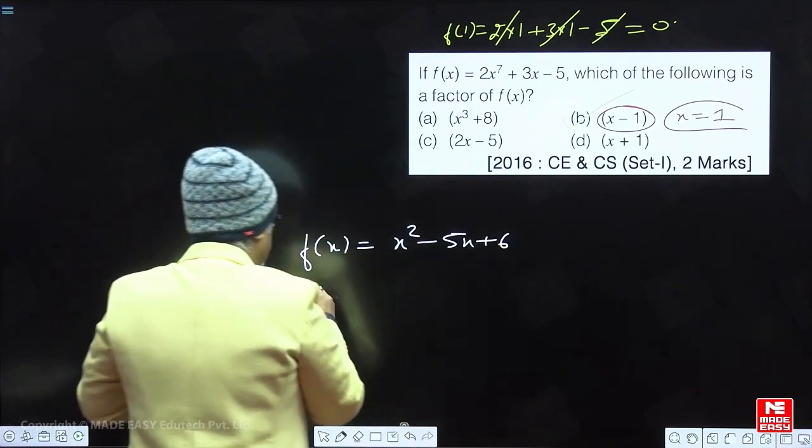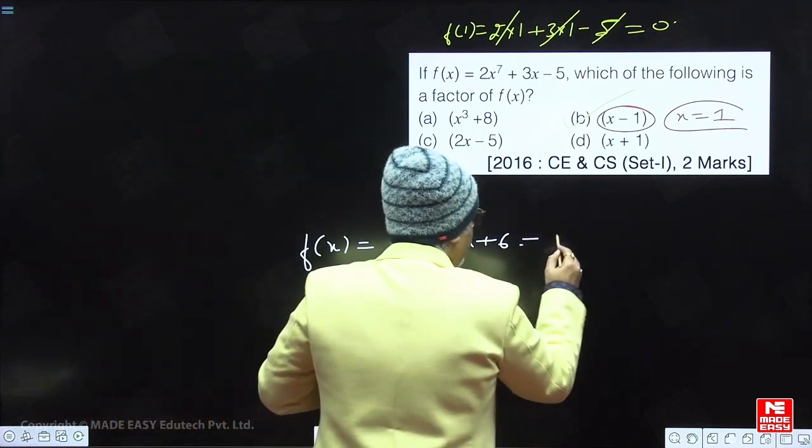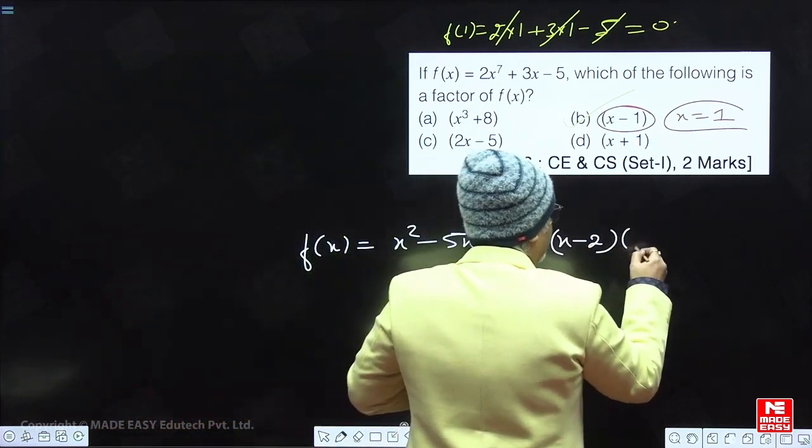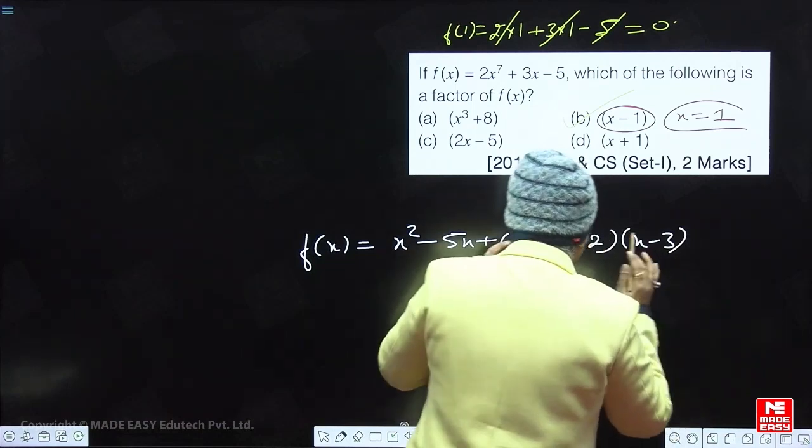This is the case. So I can surely say this quadratic polynomial can be factorized into 2 linear factors, x minus 2 and x minus 3.